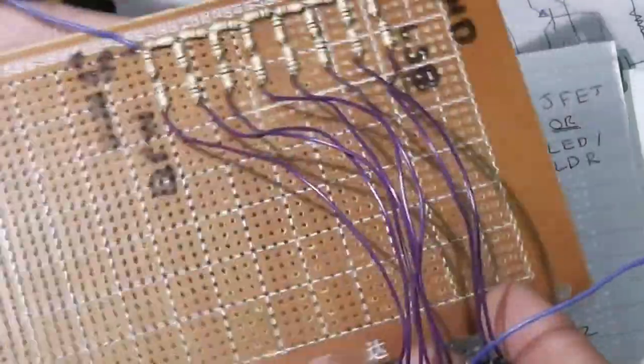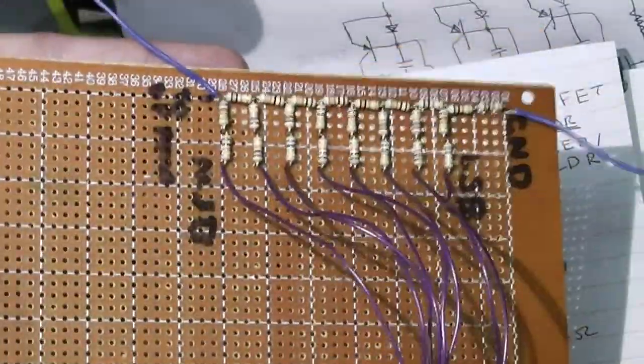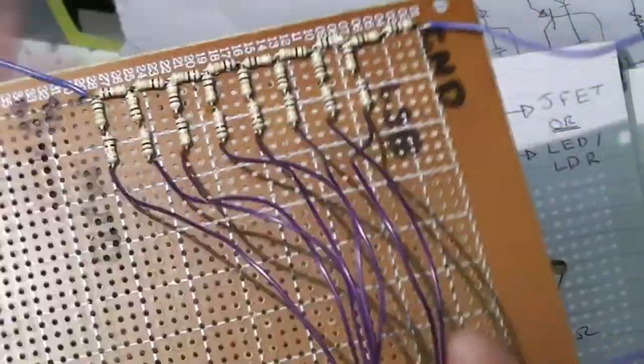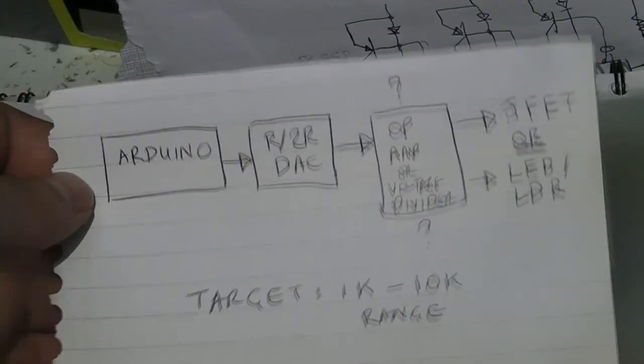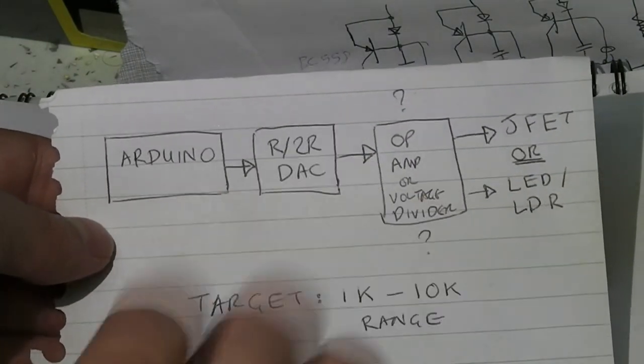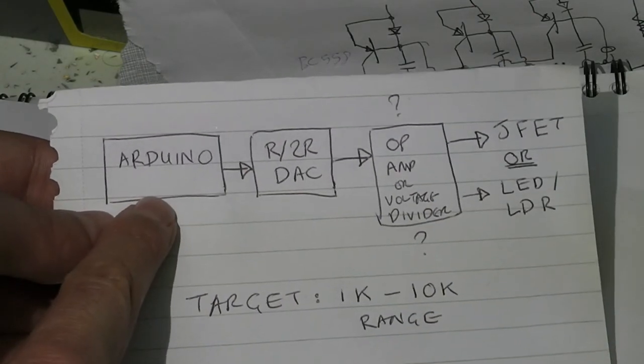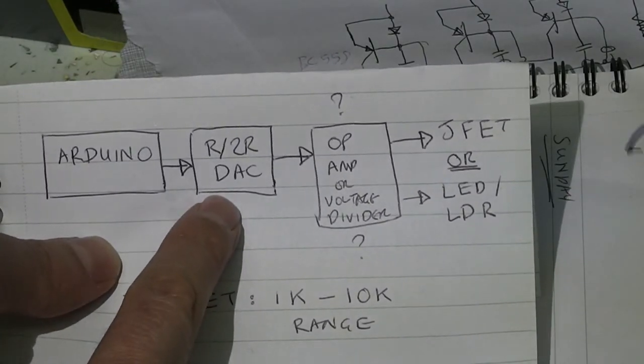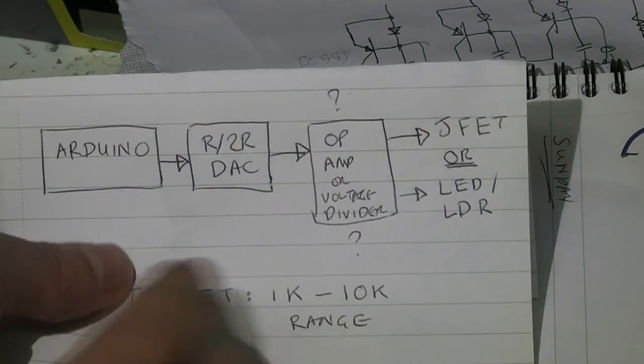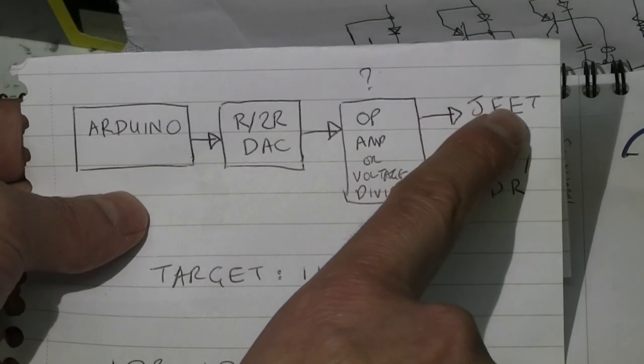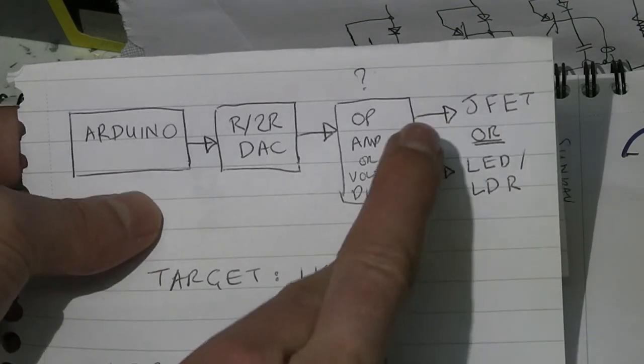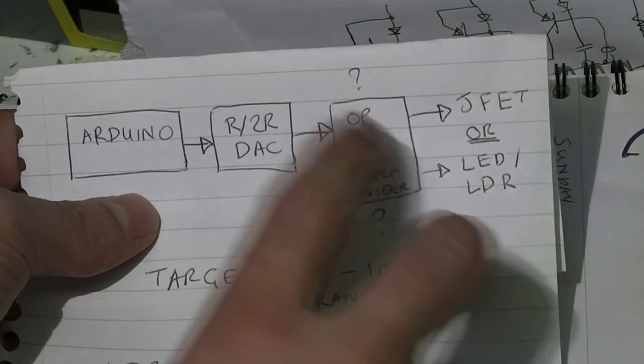Essentially what this does is transform one byte into a corresponding voltage value. For instance, 255 would be 5 volts and 0 would be 0. My plan is to build this digital variable resistor with this method. There's the Arduino, there's the R-2R digital to analog converter. The next stage is what I'm going to be experimenting with. Essentially, I'm going to either use a JFET or an LED and LDR combination to vary a resistance using the voltage from the DAC.